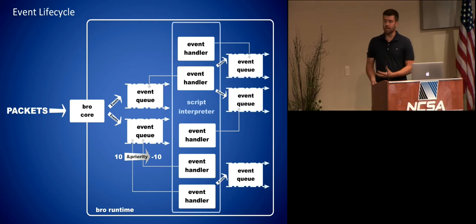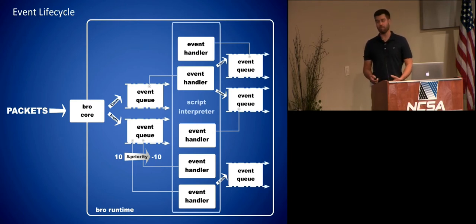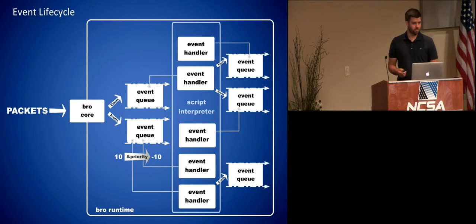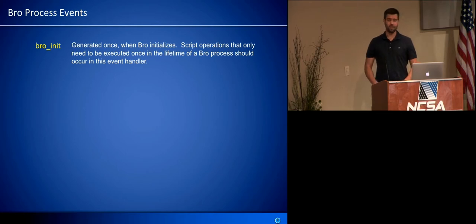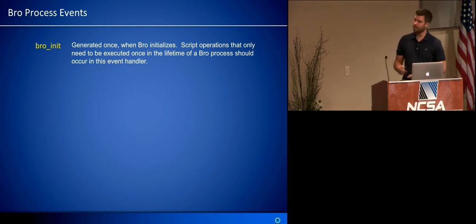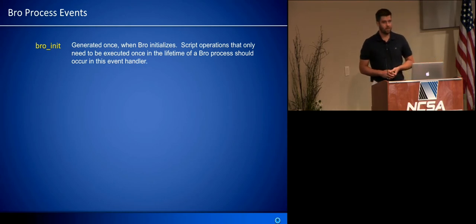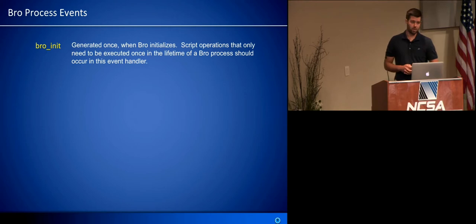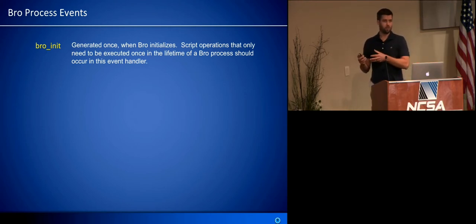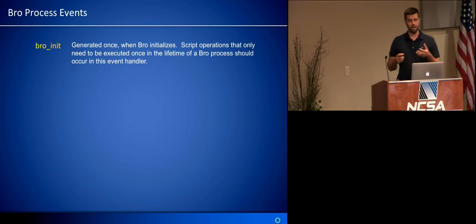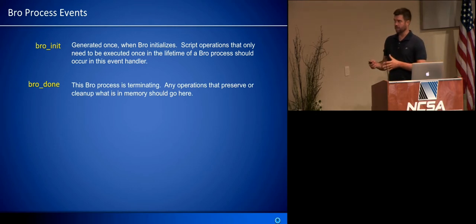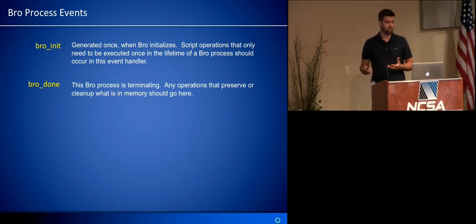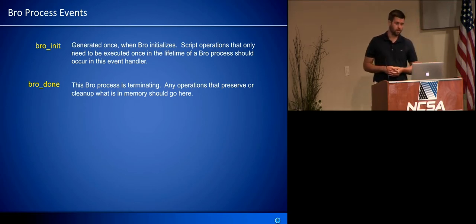I want to step through a couple of specific event types that are very important to become familiar with when getting started. The first is the BroInit event. If you've done the Hello World example, your print statement goes in this event. As you might guess, it's triggered when BRO starts up — this is where you do your work with log streams: create log streams, apply log filters, things of that nature. The other significant event tied to the BRO process is BroDone, which is triggered when BRO is shutting down.